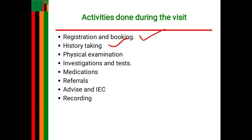You also get information about the present obstetric history. The first thing you ask is the last menstrual period (LMP). This history helps you calculate the expected date of delivery as well as the gestational age.